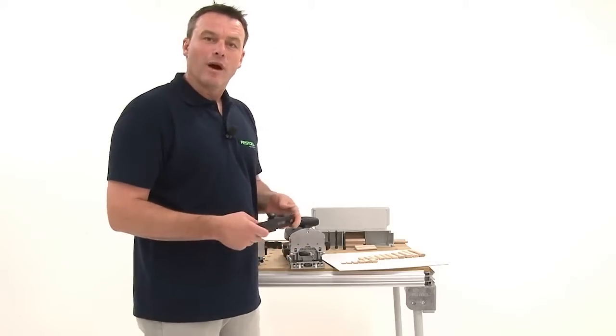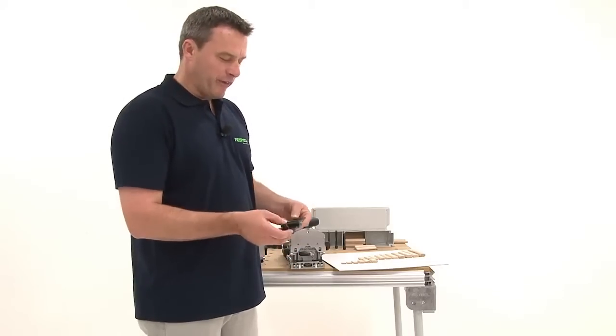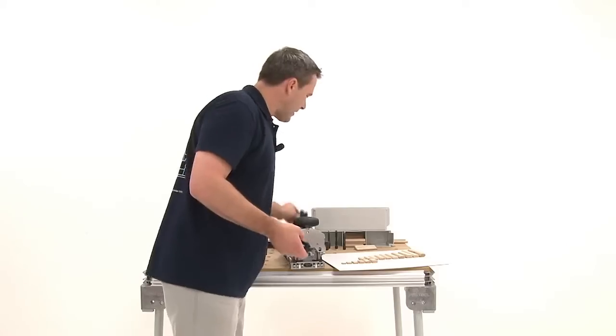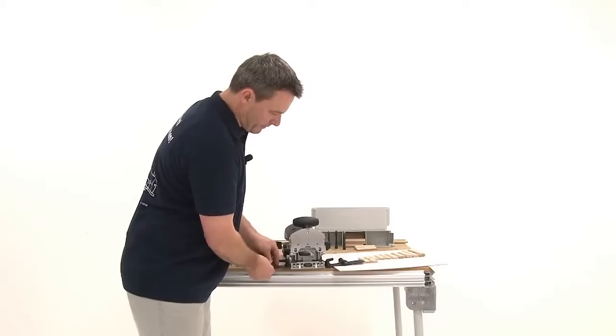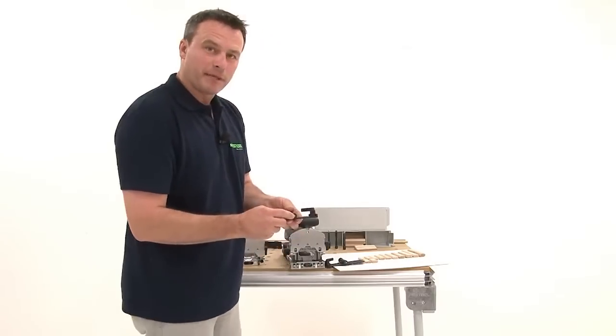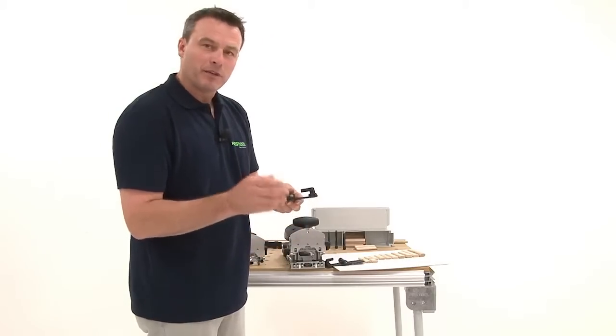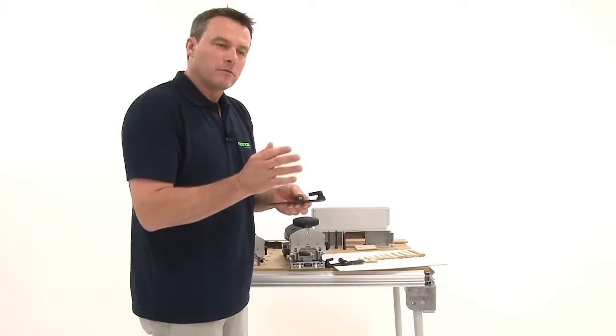For recurring holes, there are these crosscut fences. Two in number which are practically assembled on the right and left of the machine. This way I can always find my drill holes from these metal pins and always cut or drill in the same intervals.